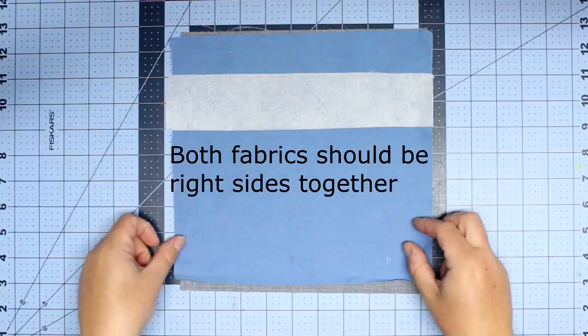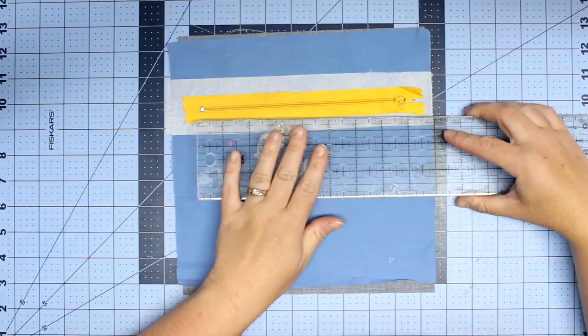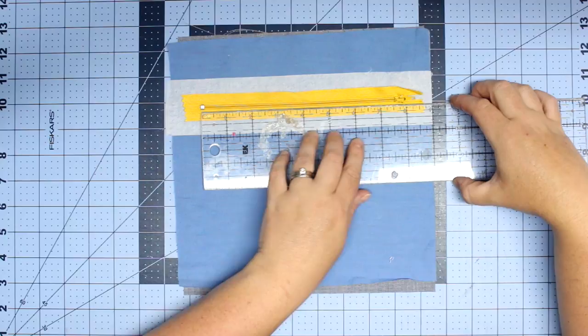So I have some blue fabric. It has no right or wrong side, so I can't really show you in this instance. But just remember that if you do have a printed fabric, then have the right sides facing down.